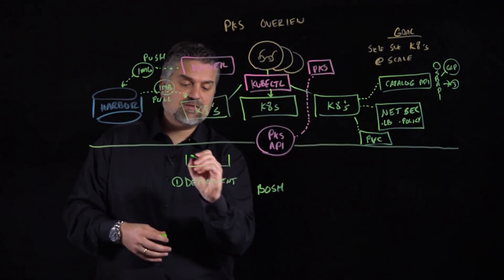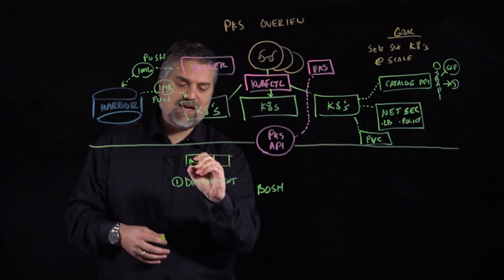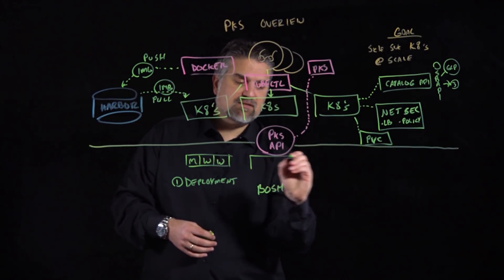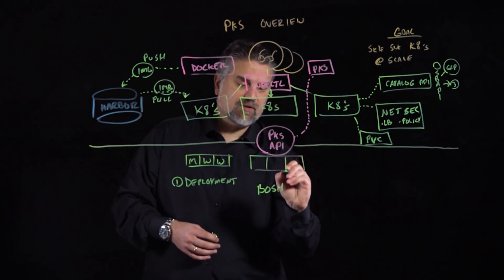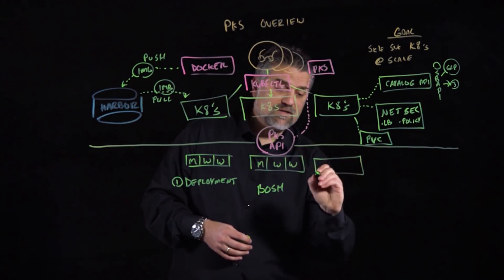For example, our Kubernetes cluster here would be built with maybe one master node. We'll just use an M and a couple of worker nodes. And we'd have a repetitive set for all of our other clusters that are being deployed, all in a self-service manner.